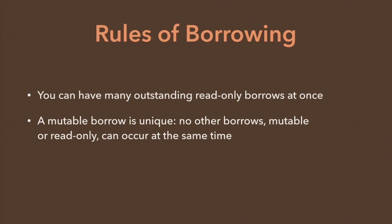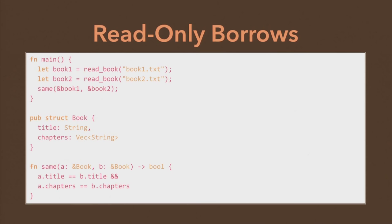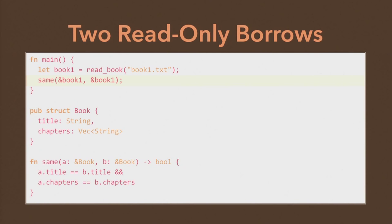I said you could have two copies of the same borrow at the same time. Here's a motivating example: I read two books, and I have a function called same that compares the titles and chapters and returns a Boolean. This is totally allowed — I can take a book and lend it, and I'm doing that here. Note that I wrote this function same and it takes two books without asserting they're not the same object. So if I pass the same book twice, it's totally fine to have two aliases to the same read-only thing. You can take something and give it read-only to multiple things at the same time.